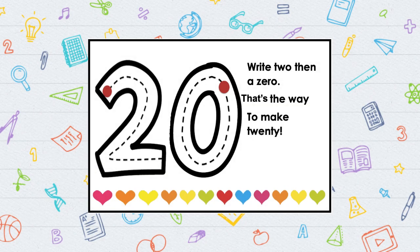Write two, then a zero. That's the way to make twenty.